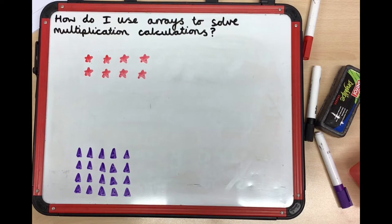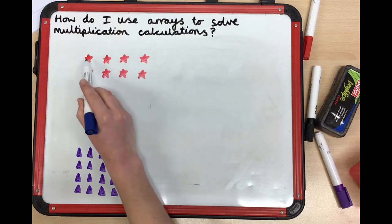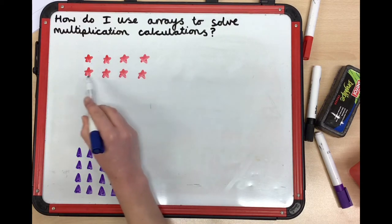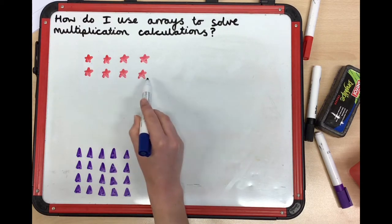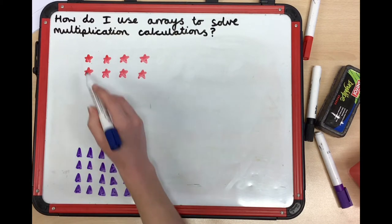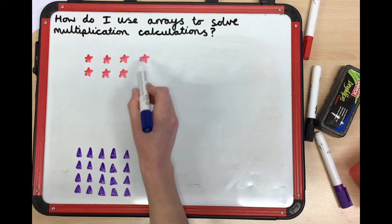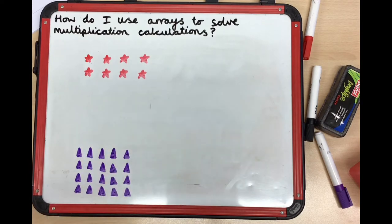How many rows do we have? Rows go across. We've got two rows, and in each row we have got one, two, three, four stars.